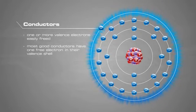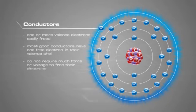Most good conductors have one free electron in their valence shells. Good conductors do not require much force or voltage to free their electrons, thus propagating the flow of energy.